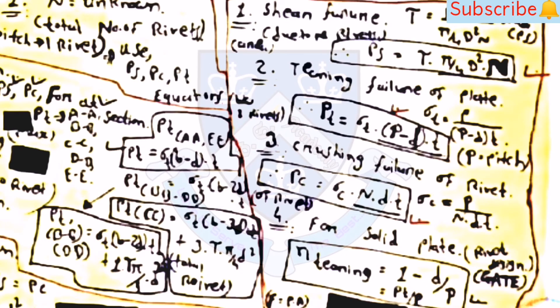When n is unknown, use these steps: shearing failure P_s = tau × (π/4) × d² × n; tearing failure of plate P_t = Sigma_t × (p - d) × t; crushing failure P_c = Sigma_c × n × d × t. For efficiency of the solid plate: eta_tearing = (1 - d/p) = P_t/P; eta_shearing = P_s/P; eta_crushing = P_c/P. Strength of the rivet joint is taken from minimum of P_s, P_c, and P_t. Strength of the rivet is taken from minimum of P_s and P_c. Eta_joint equals minimum of eta_t, eta_s, and eta_c.